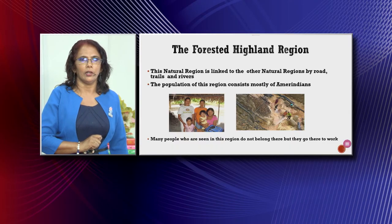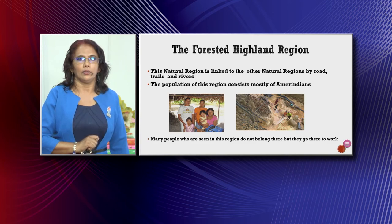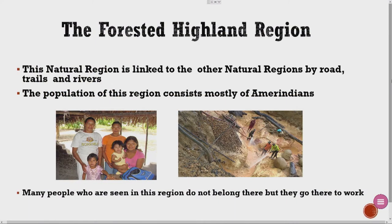This natural region is linked to the other natural regions by road, trails and rivers. You can travel from this region to go to the other regions either by trails, road, or river. The population of this region consists mostly of Amerindians. Many people who are seen in this region do not belong there — they go there to work. Remember, this region is sparsely populated.